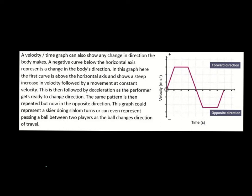A velocity-time graph can also show positive and negative velocity, with positive above the line and negative below. The mistake people make is thinking that negative velocity just means deceleration. That can't be the case because you can have a line going both ways above and below. A velocity-time graph like this also shows a change in direction — this is the forward direction and this is the opposite direction.